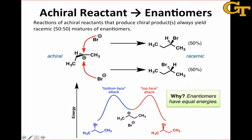So here, for example, we see a planar carbocation. I can draw this carbocation in a different orientation like this, with the ethyl group off to the right, the methyl group pointing upward, and then the implicit hydrogen here and the positive charge on the central carbon. So this is an achiral cation.